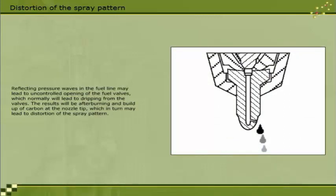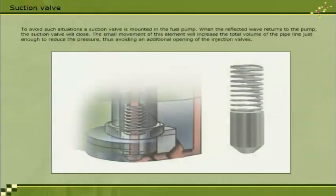The results will be after burning and build-up of carbon at the nozzle tip, which in turn may lead to distortion of the spray pattern. To avoid such situations, a suction valve is mounted in the fuel pump. When the reflected wave returns to the pump, the suction valve will close. The small movement of this element will increase the total volume of the pipeline just enough to reduce the pressure, thus avoiding an additional opening of the injection valves.